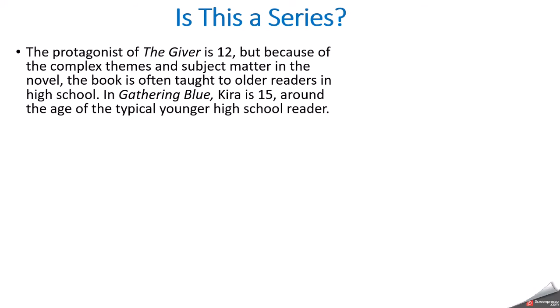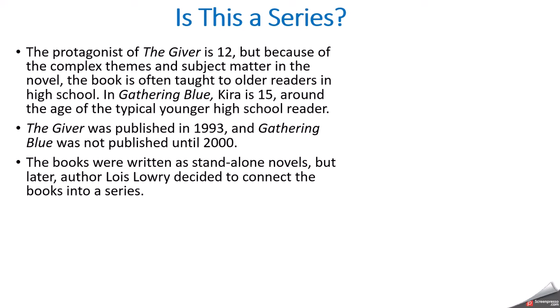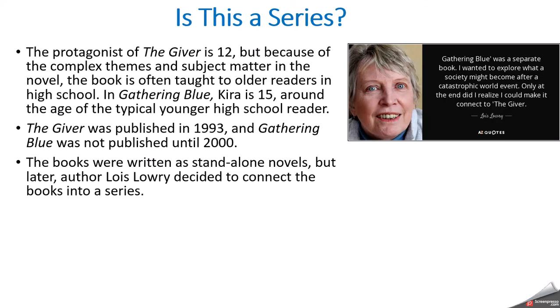Is this a series? The protagonist age: Jonas in The Giver is 12, but the subject matter is heavier so it's often taught to high school teens. Kira in Gathering Blue is about 15, around the age of the typical younger high school reader, maybe around 10th grade. The Giver was published in 1993. Gathering Blue was published seven years later in 2000. These were followed by two other books, Messenger and Son. But initially they were written as standalone novels, and only later did Lowry decide to connect the books into a series.